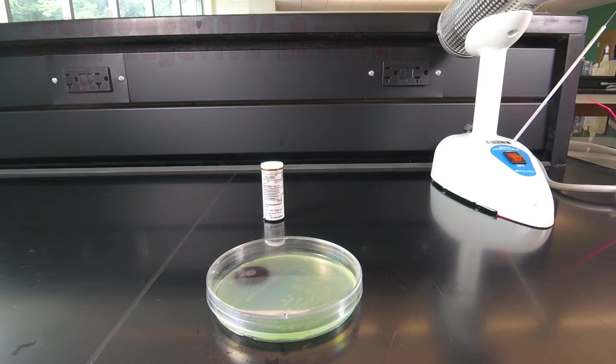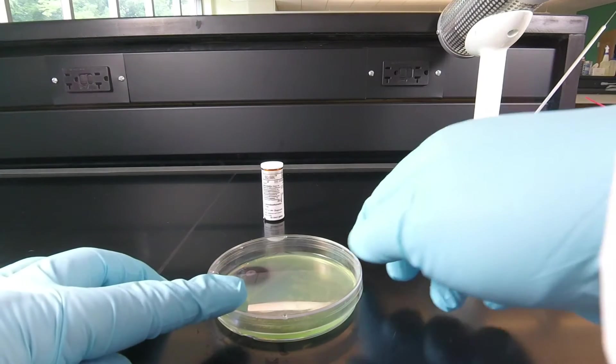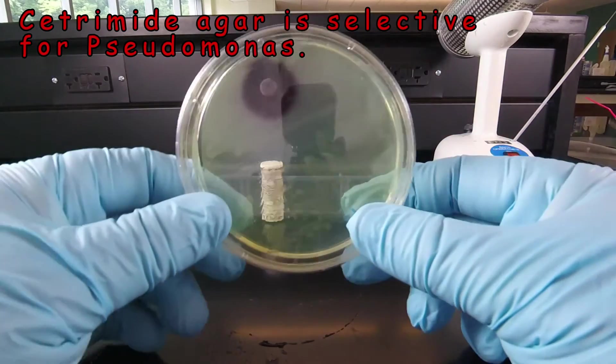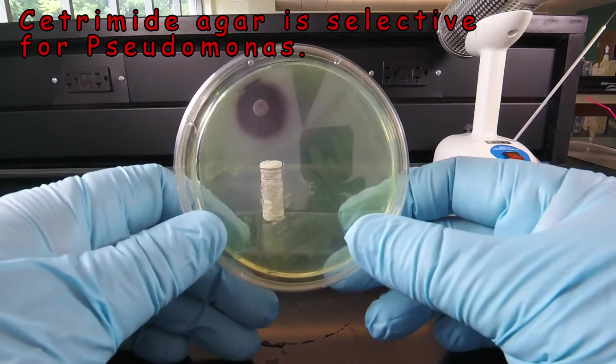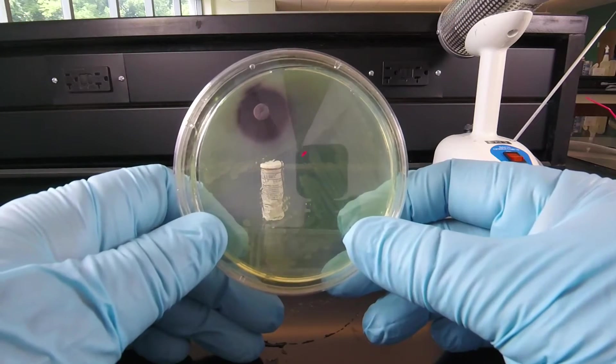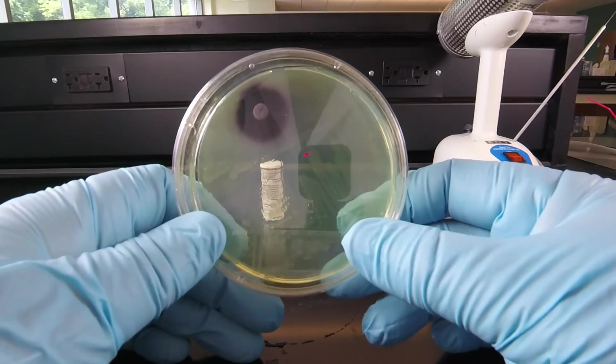We then streaked the bacterium on cetramide agar, and as we learned in a previous video lecture, this agar is selective for Pseudomonas and also stimulates Pseudomonas to produce its green water soluble pigment.